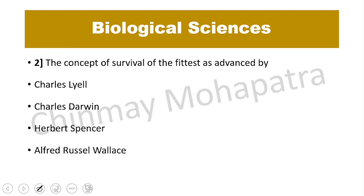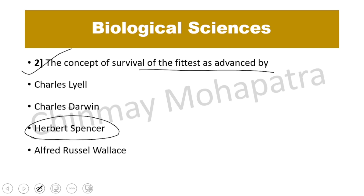Question number 2. The concept of 'survival of the fittest' was advanced by? The right answer is Herbert Spencer, in 1864. He was the writer of 'Principles of Biology'.